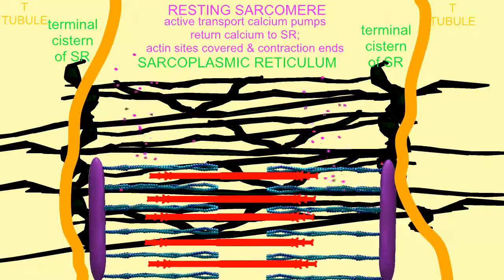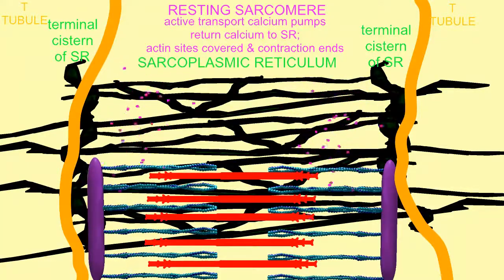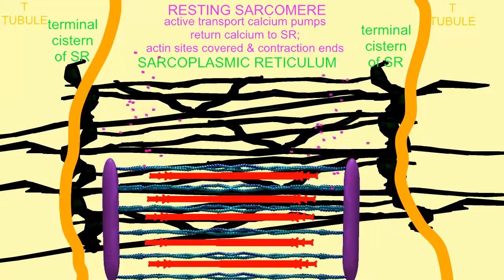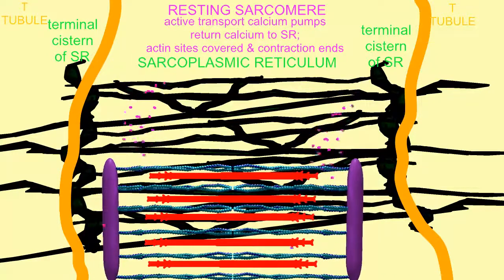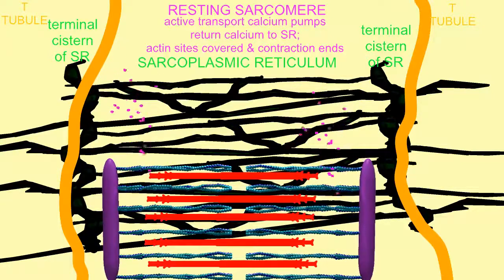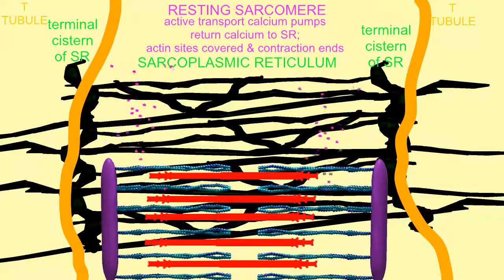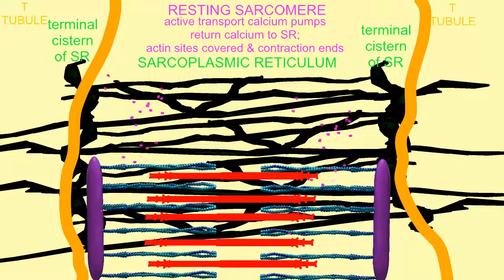Without calcium ions, the inhibitory proteins of troponin and tropomyosin will once again cover the active sites of actin. The active transport pumps use ATP to pump calcium back into the sarcoplasmic reticulum and thus end a contraction.